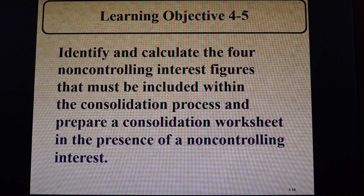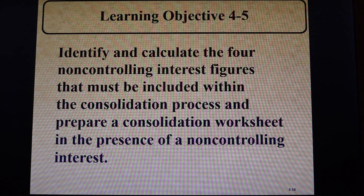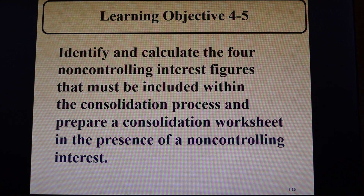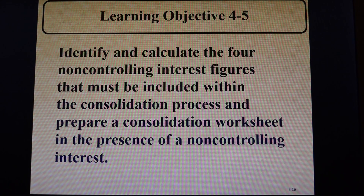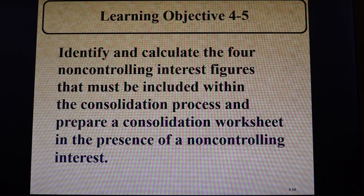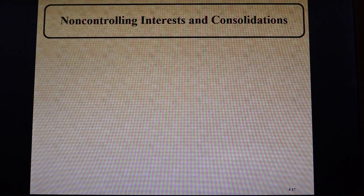The next thing we want to talk about is how you handle these consolidations when you don't own all of the sub. It's basically the same consolidation entries we made before — the SADIE entries — and there are four additional things you have to do: calculate the four non-controlling interest figures, and include a new column in your consolidation worksheet that shows these figures.